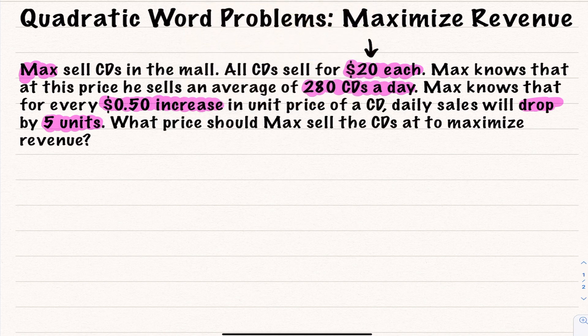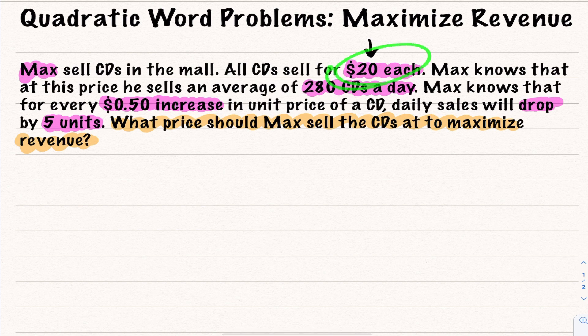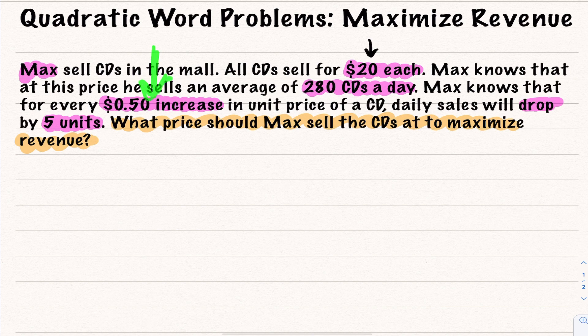The question becomes: what price should Max sell these CDs at to maximize his revenue? At $20 per CD, he can sell 280 CDs per day, and he's observed that as he increases the price by 50-cent intervals, he loses five sales per day. The idea is that it's not always the highest price or the cheapest price that generates the most revenue — a lot of times it's something in between.